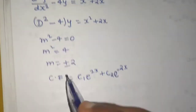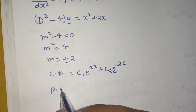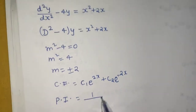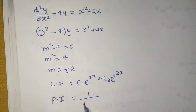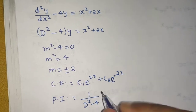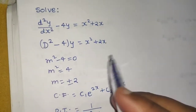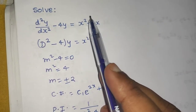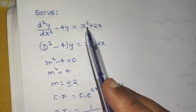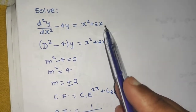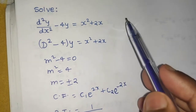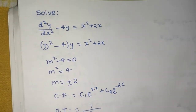Now, moving ahead with the particular integral, which is the interesting part. It will be 1 over f(D), which is D² minus 4, operating on x² plus 2x. You may apply the formula on x² plus 2x together, or on x² and 2x individually — it doesn't matter.